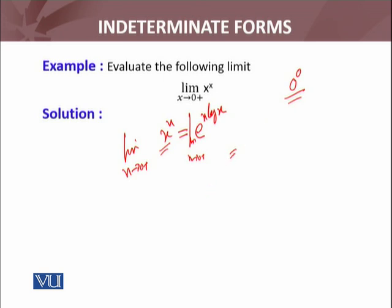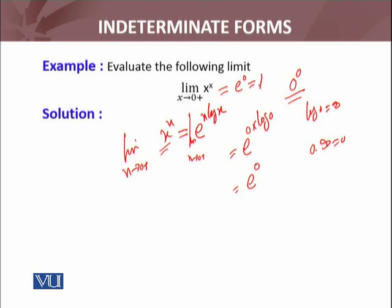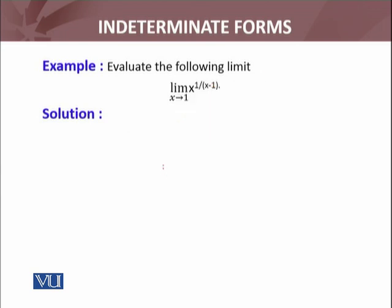अब x approaches to 0, ये तो मेरे पास 0 into infinity की form बनेगी. This equals e raised to power (limit x→0⁺ of x·log x). Log of 0 from the right side is negative infinity, so we have 0 into infinity — हमें पता है ये 0 होता है. So that will be e raised to power 0, so the limit equals e^0 which is 1.